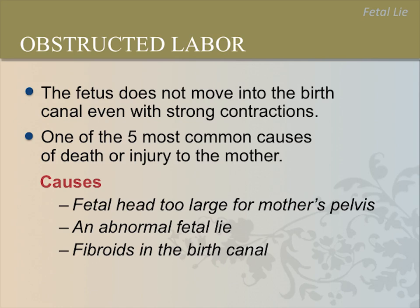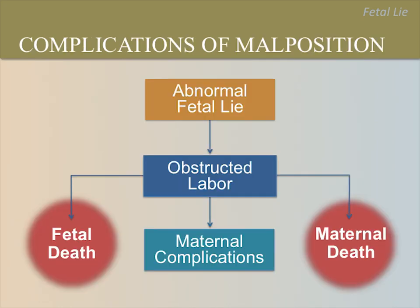The most common cause of obstructed labor is a fetal head that is too large for the mother's pelvis. An abnormal fetal lie and benign tumors like fibroids in the birth canal are also causes. The risk of complications during birth is many times higher with a transverse lie or a breech presentation than with a cephalic presentation. Obstructed labor can result in fetal or maternal death or maternal complications. During a prolonged and obstructed labor, oxygen flow to the baby's brain can decrease, resulting in death or disability. Another possibility is that the long labor results in a hole or tear between the mother's vagina and rectum or vagina and bladder, which is called a fistula. With a fistula, the woman is unable to control her feces or urine. A mother can also die from a ruptured uterus or infection.